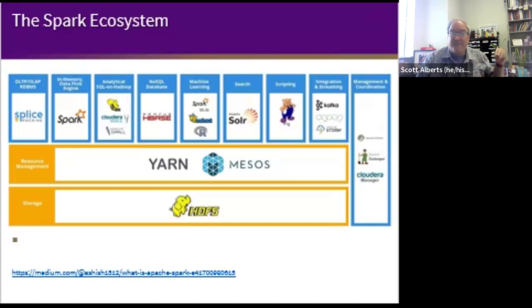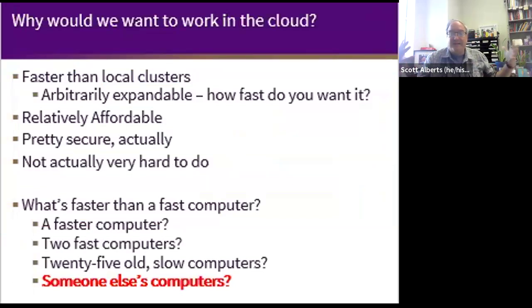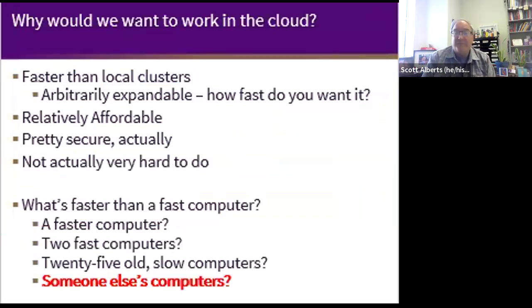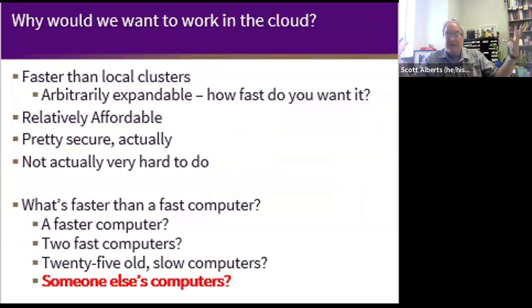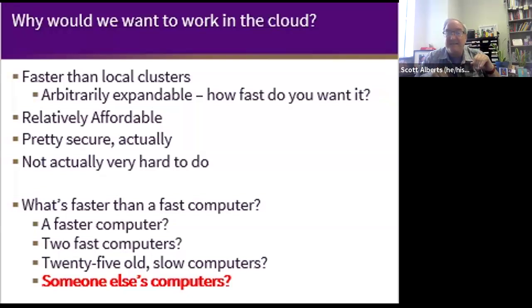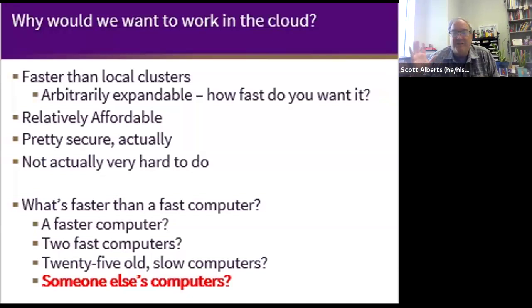We can take that a step further and imagine that the computers aren't even located near us — they're in the cloud. This is often faster than local clusters. One of the advantages of a tool like AWS, Google Cloud, or Microsoft Azure is that you can get more machines when you need them. Maybe your own computer is fine on a given day, but every month you run a sales report or once a quarter you have a big job. Netflix, once a week, redoes all of its search algorithms and needs more machines — they use Amazon Web Services for that at a discount.